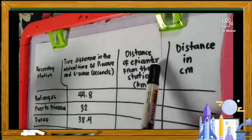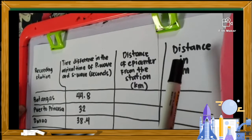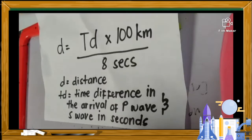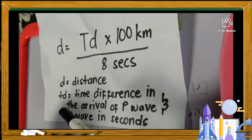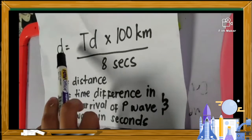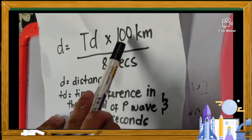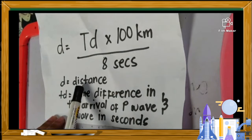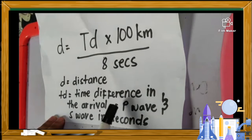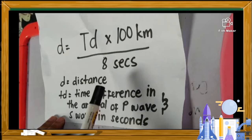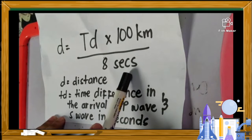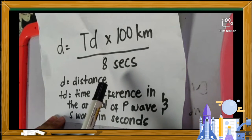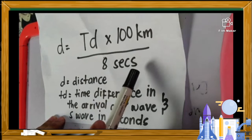Now, we're going to solve for the distance of the epicenter from the station. We're going to use the formula D equals Td times 100 kilometers all over 8 seconds. D stands for distance and Td stands for the time difference in the arrival of P wave and S wave in seconds. We use 8 seconds because that is the interval between the times of arrival of the P wave and S wave at the distance of 100 kilometers.